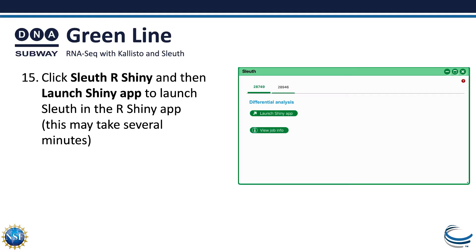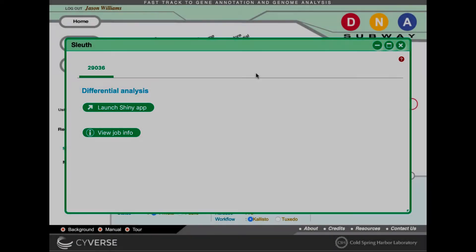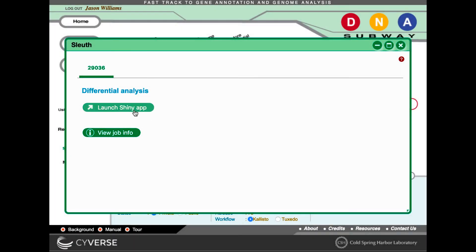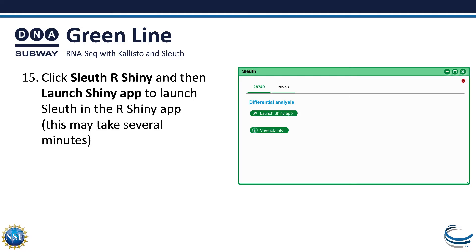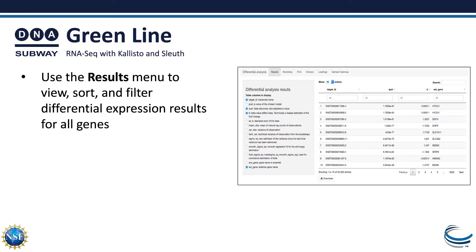To view the results, click Sleuth rShiny and then click Launch Shiny App to launch Sleuth in the rShiny app interface. This may take several minutes to load. Once the rShiny app is loaded, you'll be presented with a series of menus.